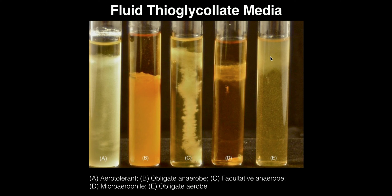And then E — what is this? Well, this is an obligate aerobe because all the growth is up at the very top where oxygen is the highest. Down here, we don't have any growth because there's no oxygen. Notice the cutoff point for the obligate aerobe in E: it starts at the top and goes down to a certain point where oxygen concentration drops off. If you go over to the anaerobe, that's where the obligate anaerobes pick up. So there's a sort of cutoff point where oxygen concentration reaches a threshold low enough that obligate aerobes stop growing and obligate anaerobes start growing.